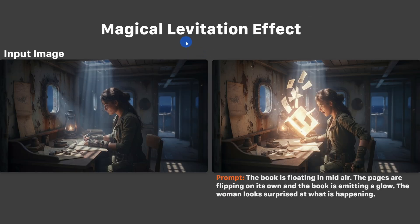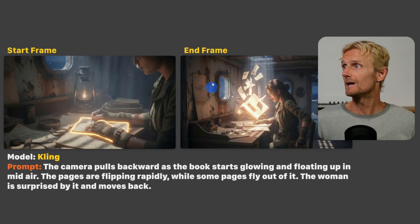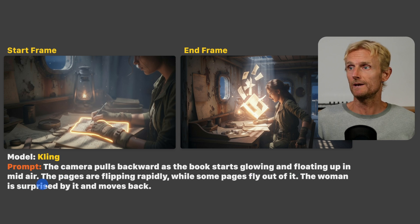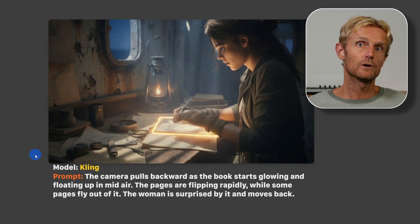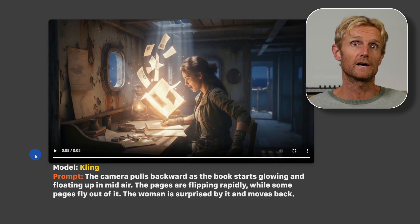For the magical levitation effect, I used the resulting image in Nano Banana with the prompt: 'the book is floating in mid air, the pages are flipping on their own, and the book is emitting a glow.' In Kling I set this as the start frame and the levitating book as the end frame, with the prompt: 'the camera pulls backward as the book starts glowing and floating up in mid air, the pages are flipping rapidly while some pages fly out of it.' I'm very excited about this shot, especially with the speed ramp effect applied.